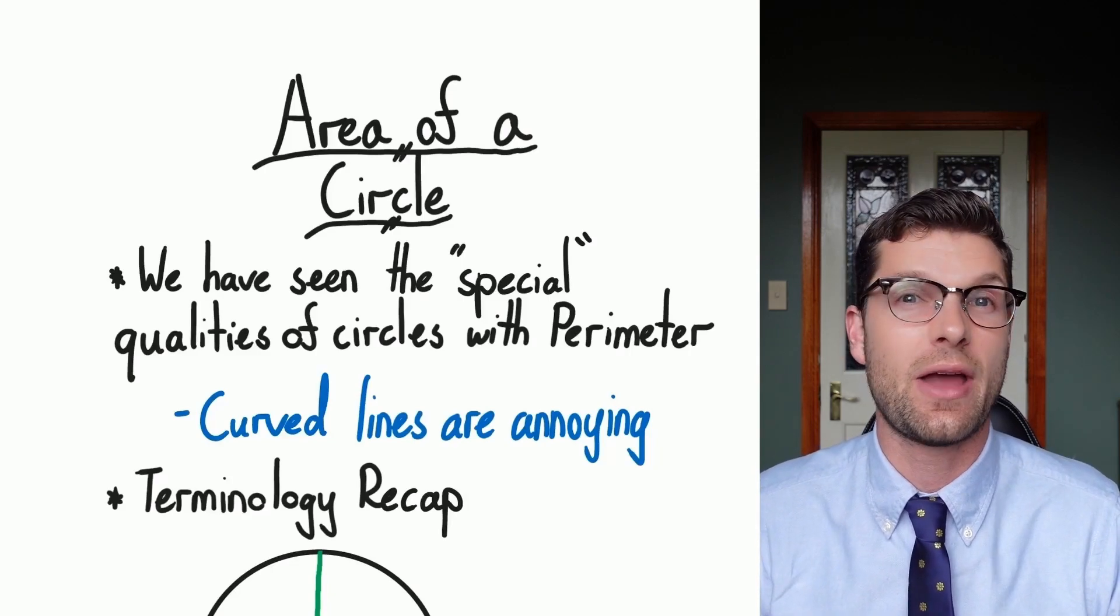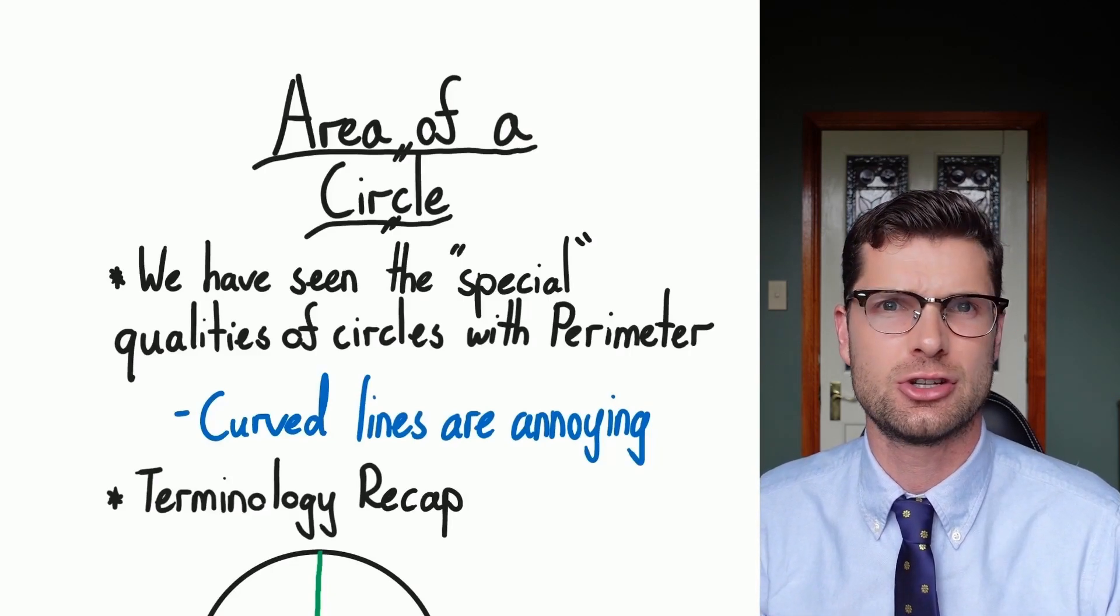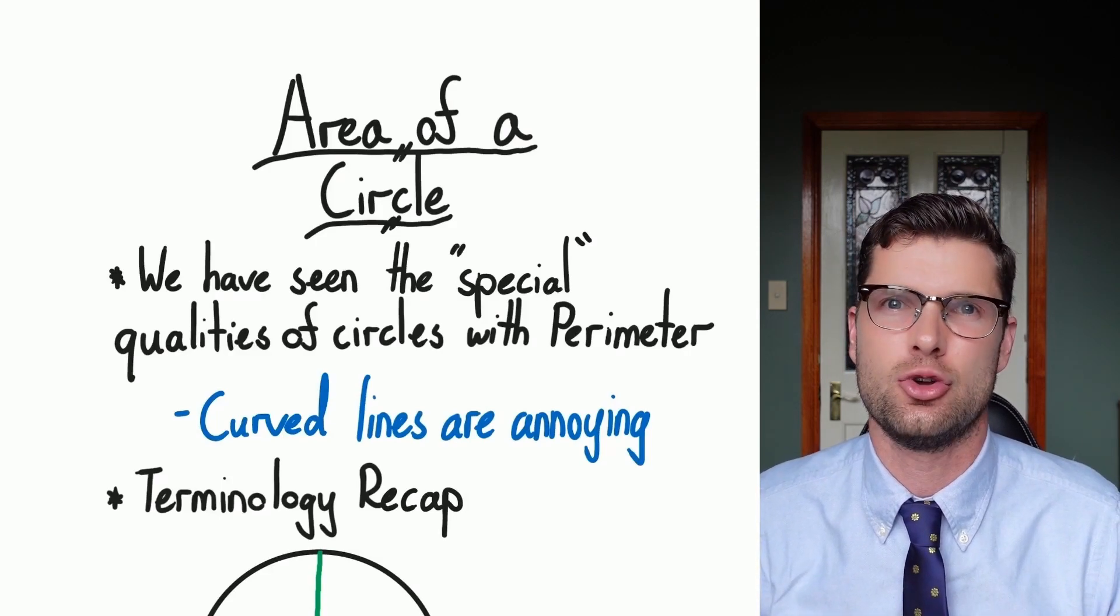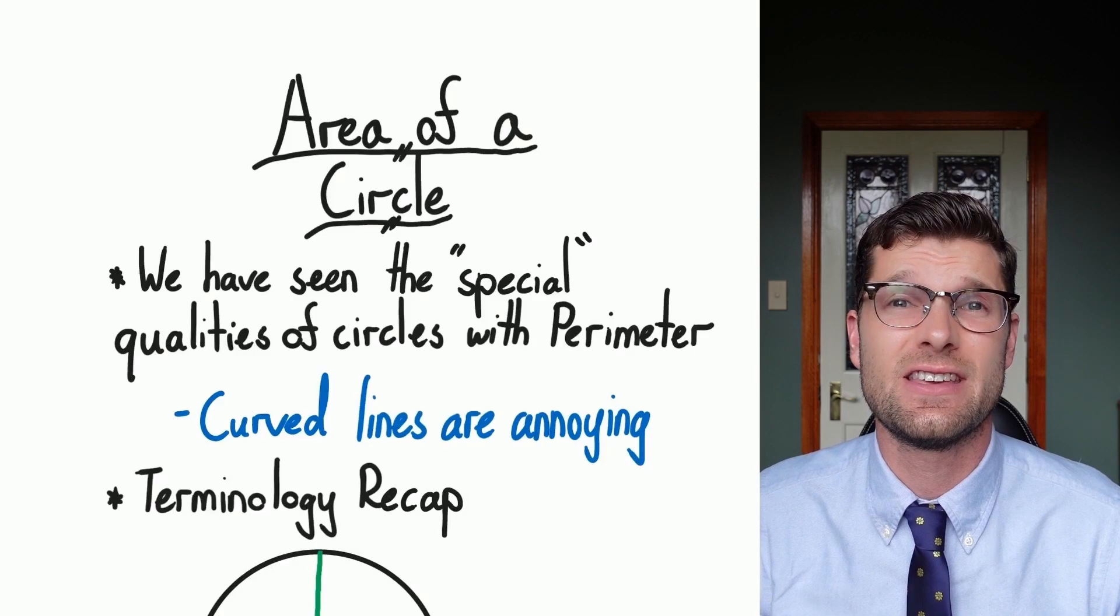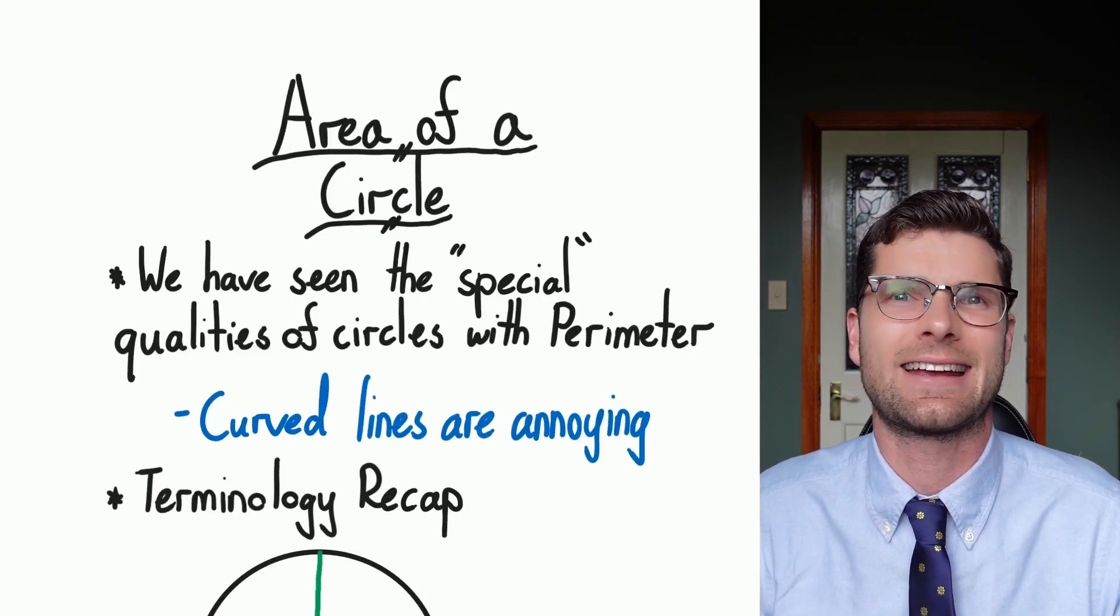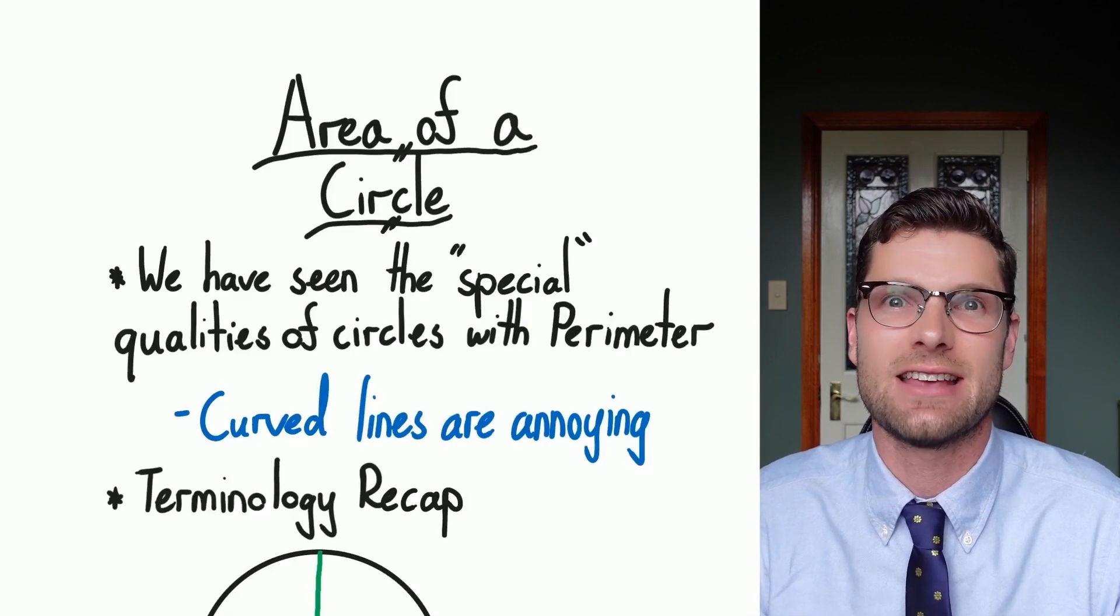We have actually talked about circles before in our perimeter topic and we found out that they're actually quite annoying compared to other 2D shapes. The reason for this is that curved lines are just super annoying. They're way harder to count because we can't just see exactly what's correct.